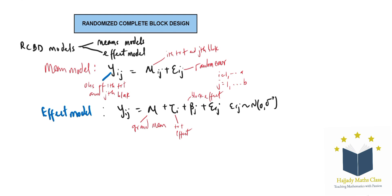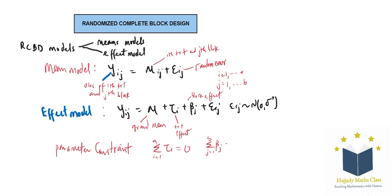There is a need to talk about the parameter constraints. This is very important when you state the model. We have τ_i, where i ranges from 1 to a, and the summation is equal to zero. Also, the second parameter β_j, where j sums from 1 to b, is also zero. So take into consideration these two parameter constraints.